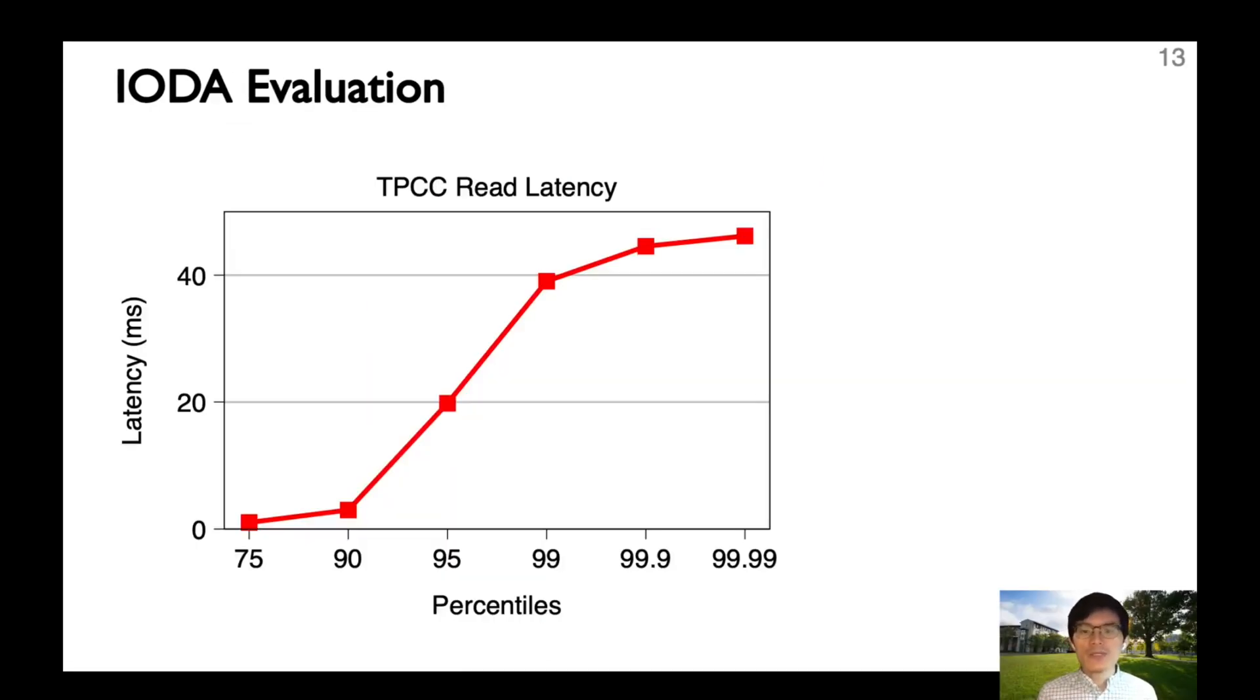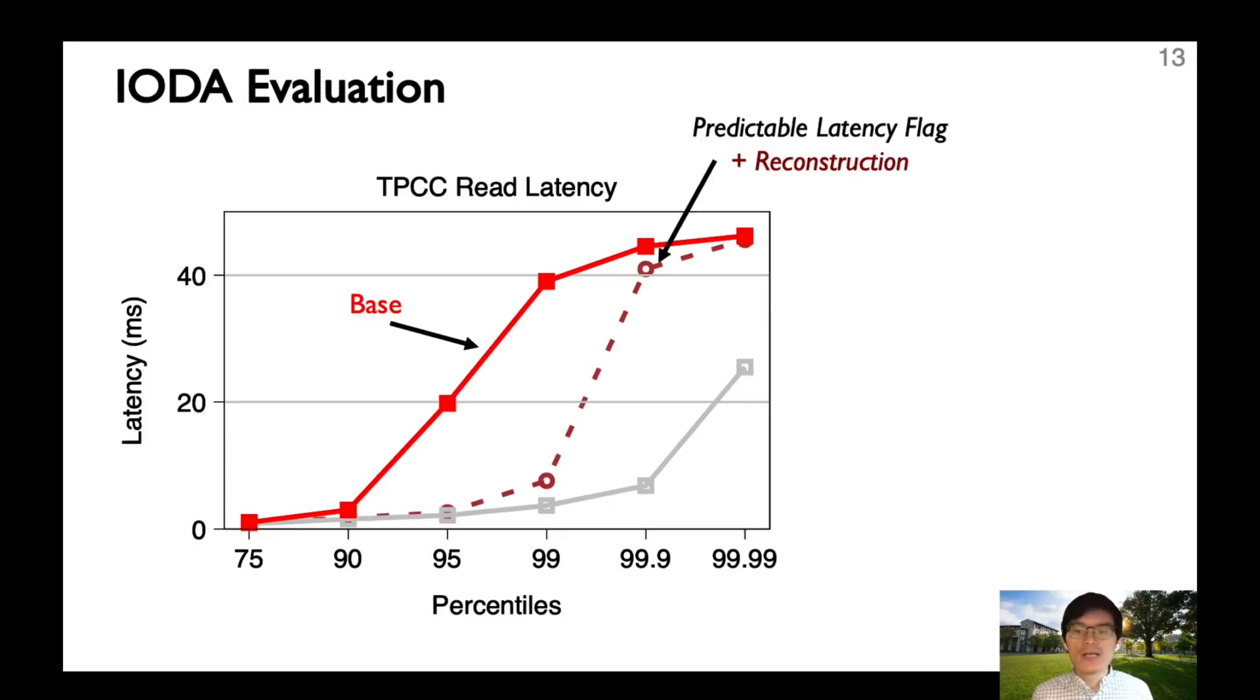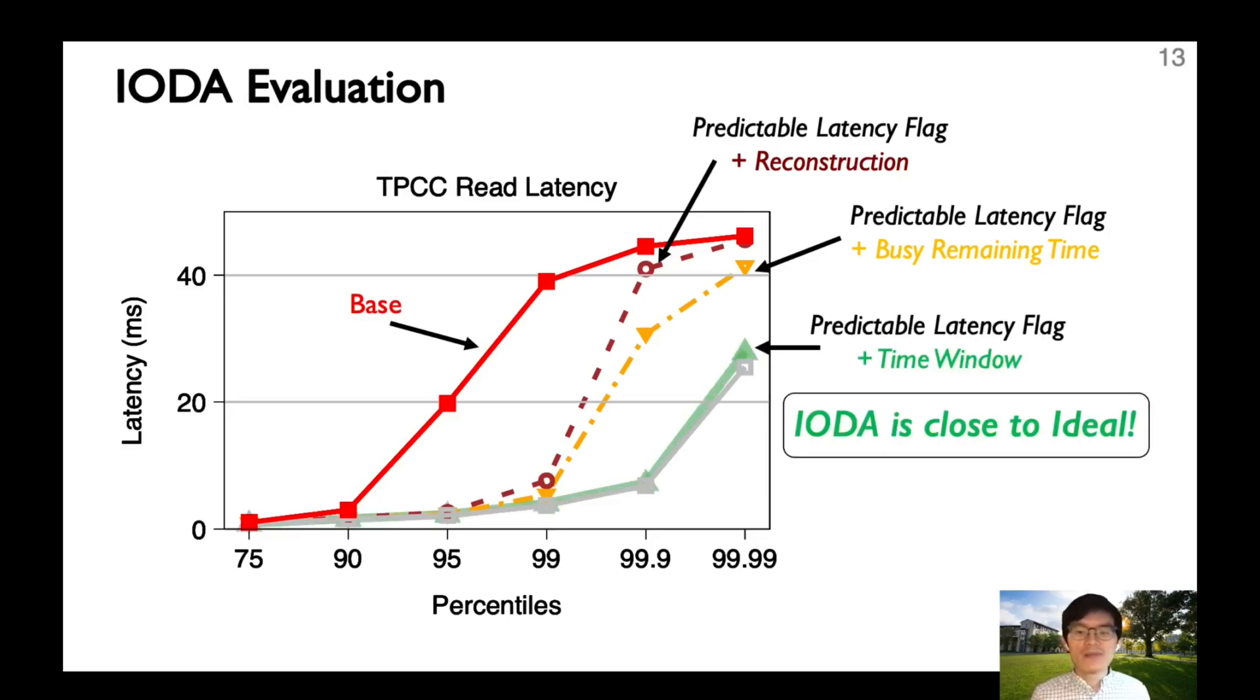Here are some IODA results on a TPCC workload. We show latencies at major percentiles. X represents percentiles, and Y is the latency in milliseconds. The red line denotes the baseline case. As we can see, the tail latency starts to become bad from the 95th percentile, reaching more than 20 milliseconds. The gray line represents an ideal no-GC scenario. With proactive reconstruction enabled by our fail-if-slow interface, we can cut tail latencies up to the 99th percentile. With the busy remaining time technique, we can further improve the tail latencies at high percentiles, such as the 99.9th percentile. Finally, with the IODA design, we can get latencies close to the ideal scenario, even up to the 4-9s percentile.